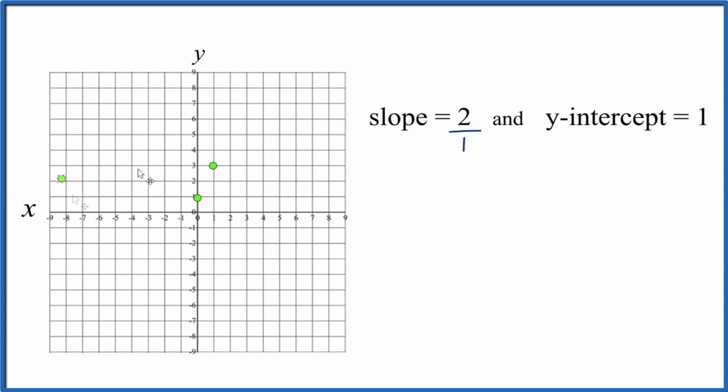We have two points. From there we rise 1, 2, we go over 1. You can see three points. We could just keep doing that, 1, 2 over 1.